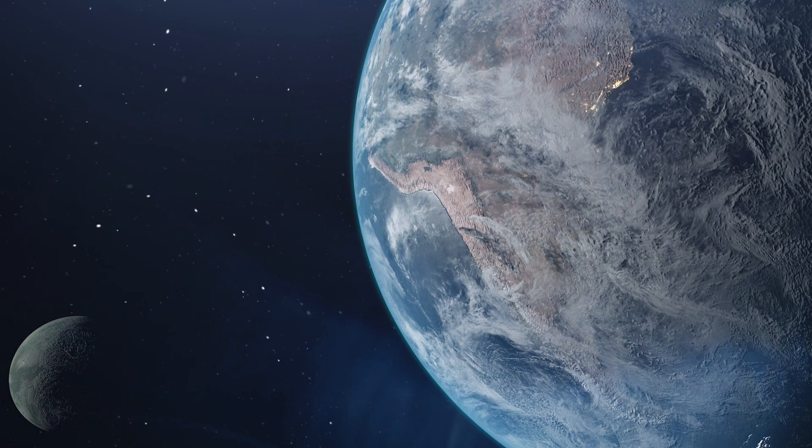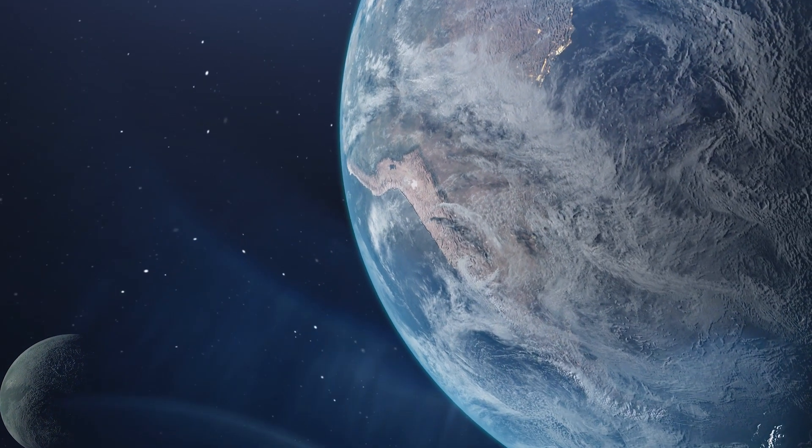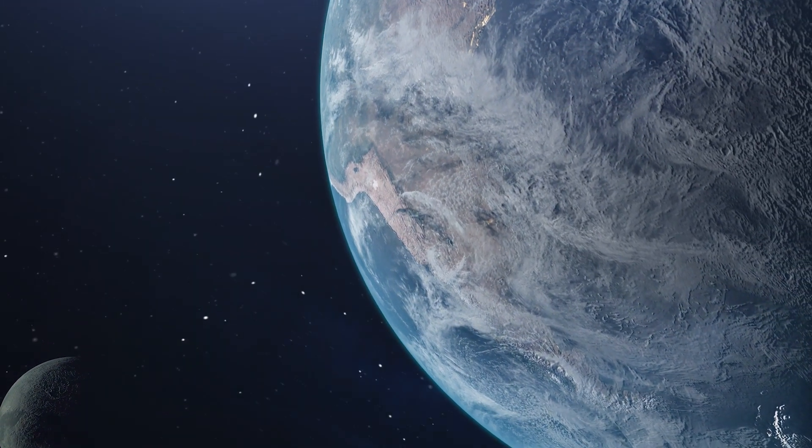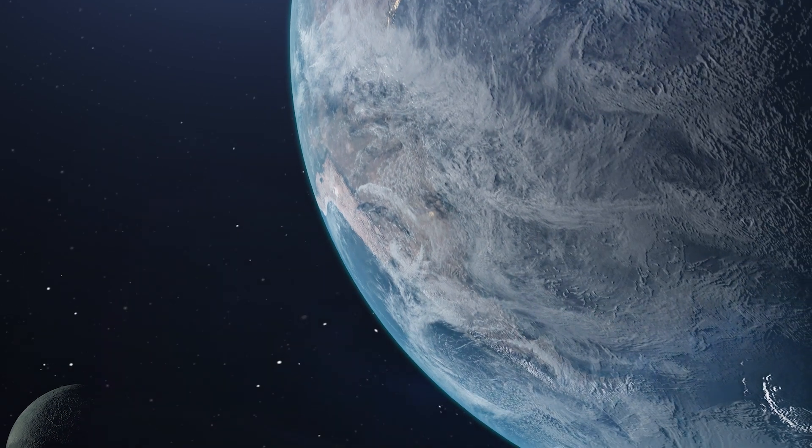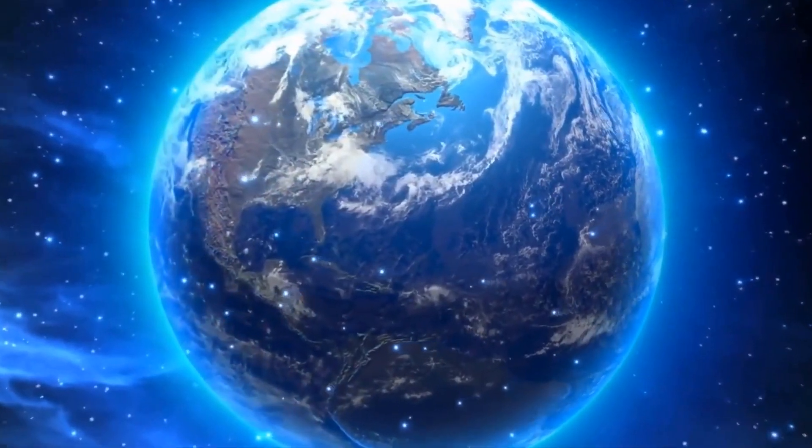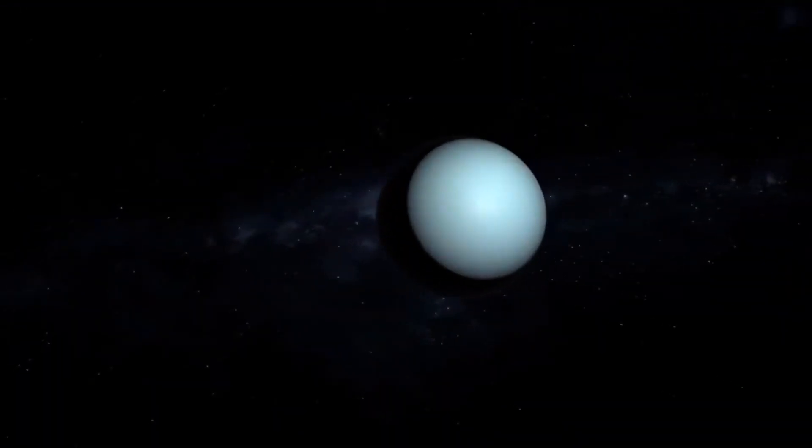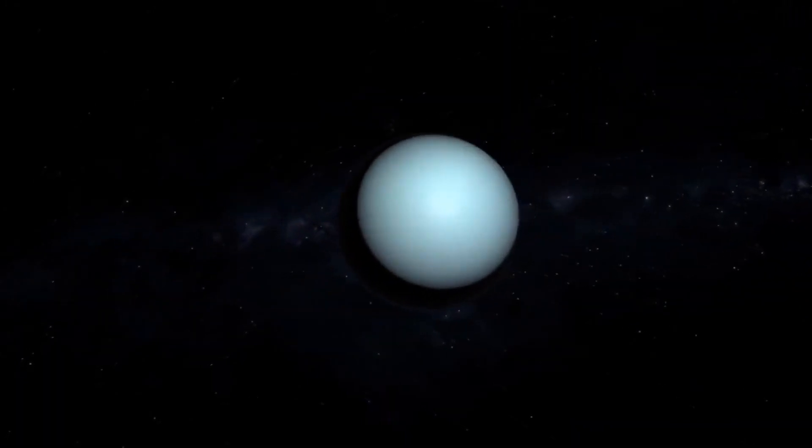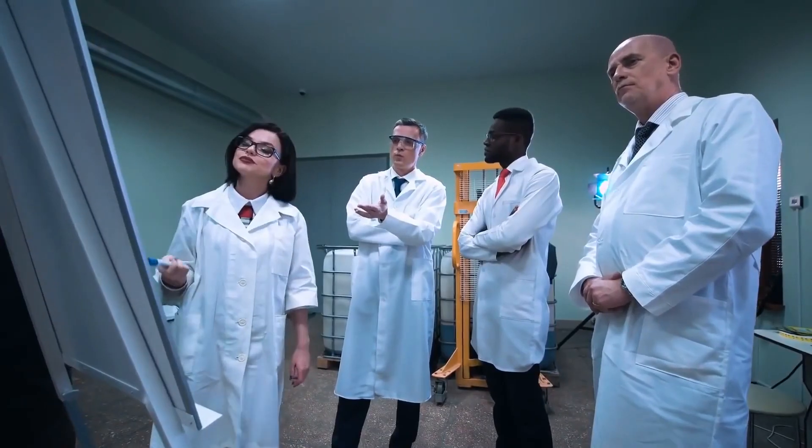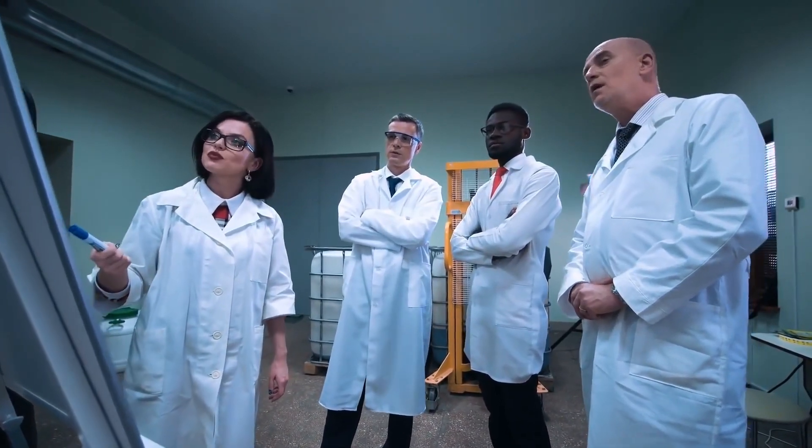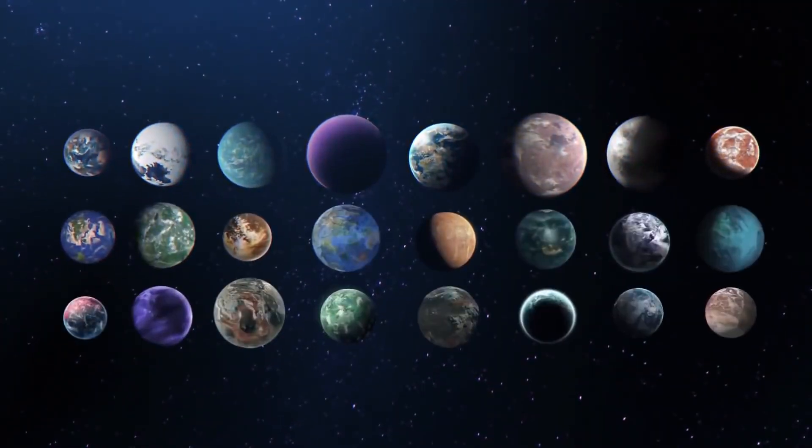Kepler-22b is 2.4 times the size of the Earth. Its mass is not known yet, and it is 600 light-years away. The jury is still out on this planet. It is too far away to get a mass estimate quickly, but astronomers are excited by the discovery of three candidates for extraterrestrial life so quickly.